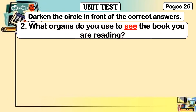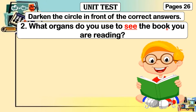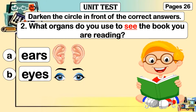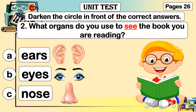Number two: what organ do you use to see the book you are reading? Letter A: ears. Letter B: eyes. Letter C: nose. The organ used to see is eyes — letter B.